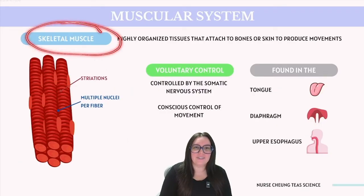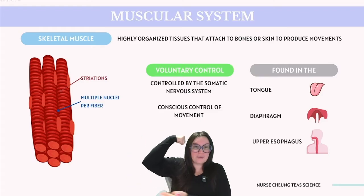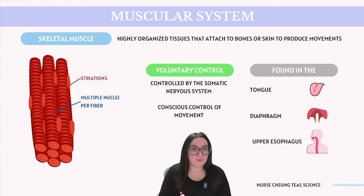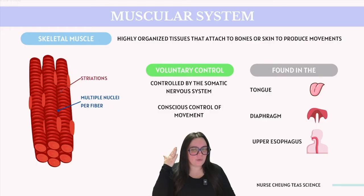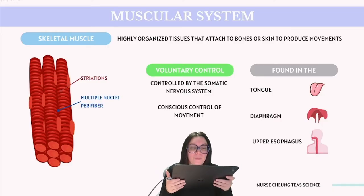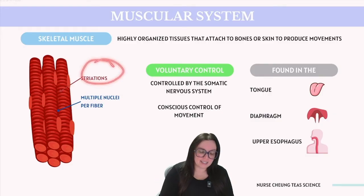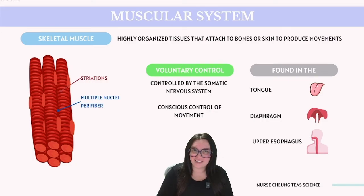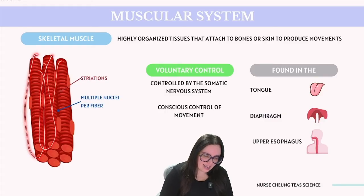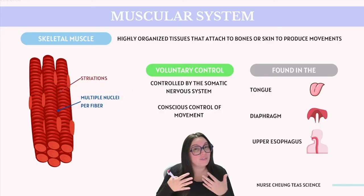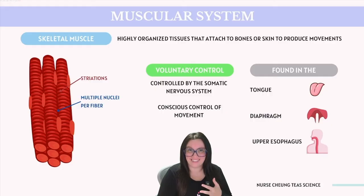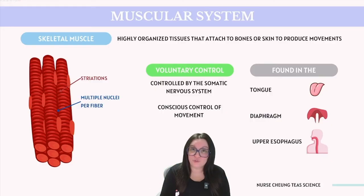Lastly, we have skeletal muscle tissue, which is what typically comes to mind whenever you think of your bicep or your tricep. This type of muscle attaches to both our bones and our skin, and it is actually under voluntary control, meaning that we can consciously operate it. For instance, anytime I think about wanting to pick something up, I'm able to consciously control that. Skeletal muscle tissue fibers are also striated, displaying that same striation appearance like cardiac muscles. The fibers themselves are long and cylindrical, and each fiber is going to have multiple nuclei — very different from cardiac and smooth muscle. This unique structure is crucial for rapid and forceful contraction over an extended period of time.